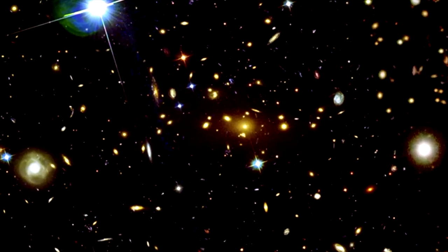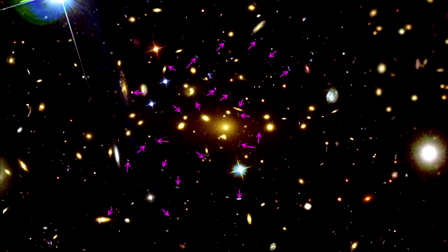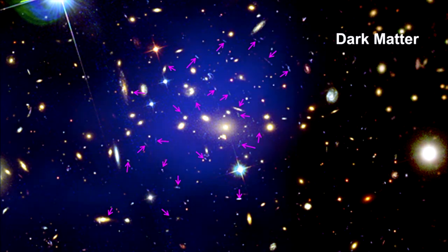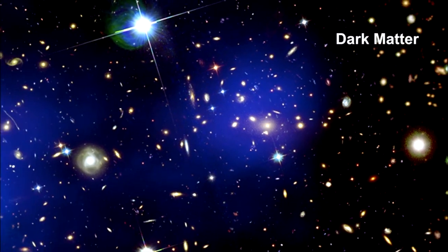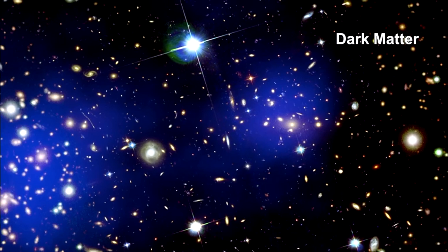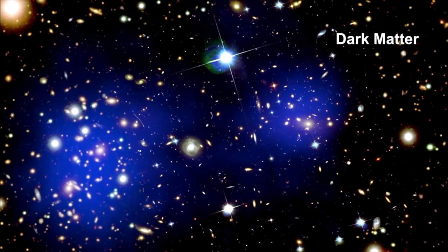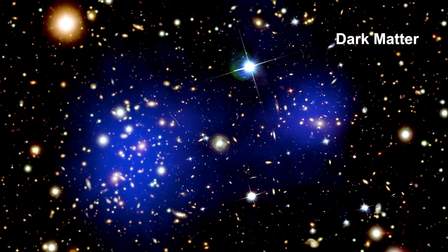If we zoom in a bit closer, we can see the tell-tale arcs of more distant galaxies lensed by the gravity of the Bullet Cluster. Counting the lensed objects and the estimated amount of light bending involved for each one, a map of the area containing most of the mass of the cluster can be superimposed. We have used blue to indicate the locations where the vast majority of the matter must be located in order to get the observed lensing.